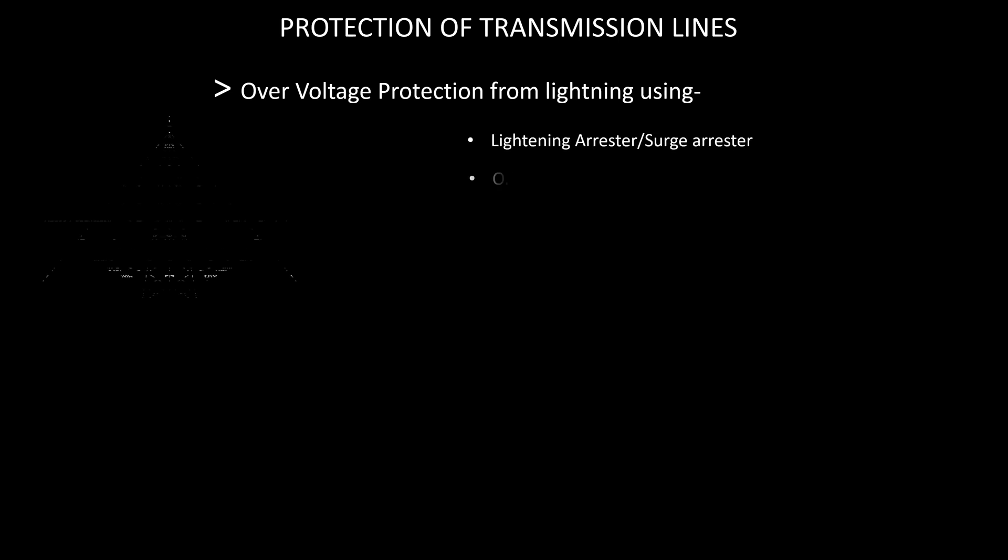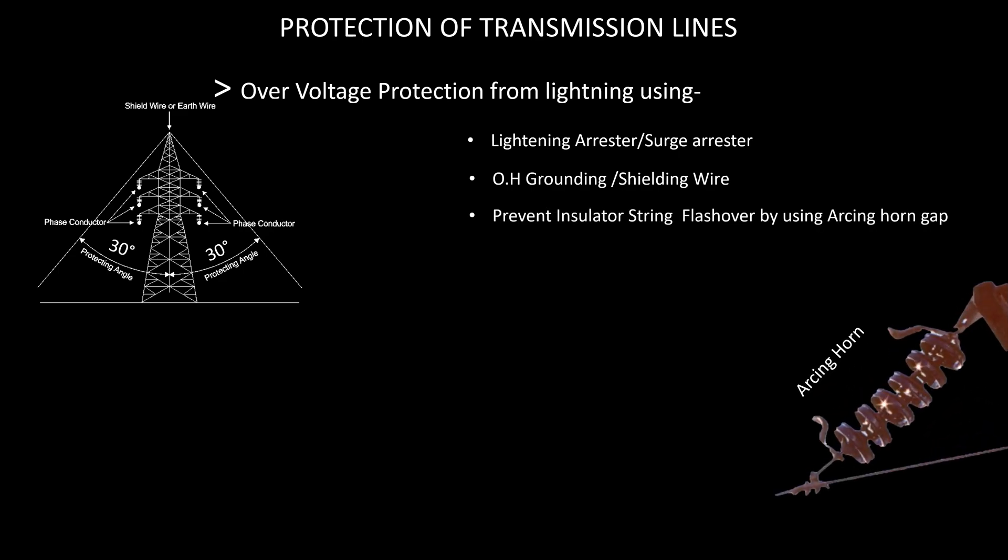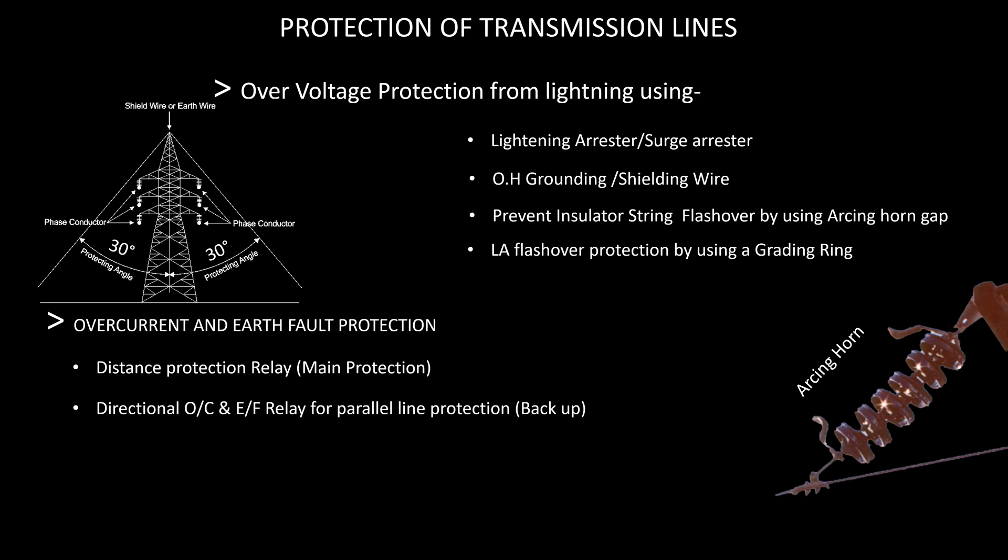Protection methods include phase to earth, overhead grounding or shielding wire, preventing insulator string flashover by using horn gap LA, flashover protection by using a grading ring, overcurrent and earth fault protection, distance protection, directional overcurrent and earth fault relay for parallel line protection, backup non-directional overcurrent and earth fault relay for radial line protection, and carrier current aided distance protection for extra HV transmission line.